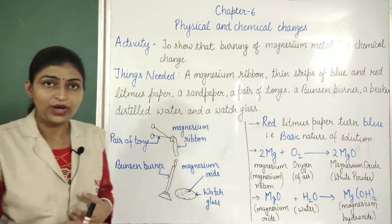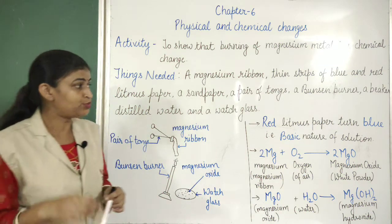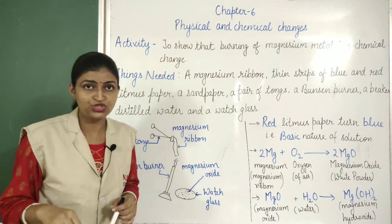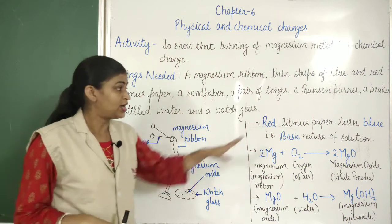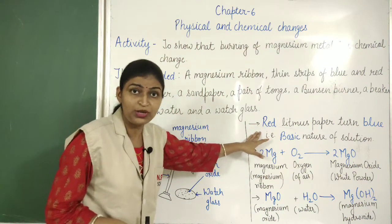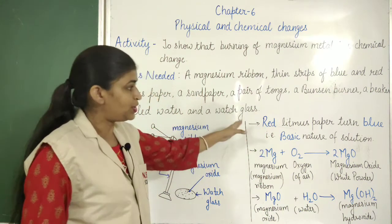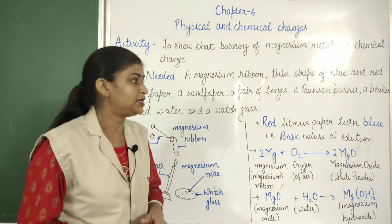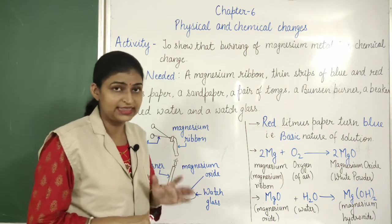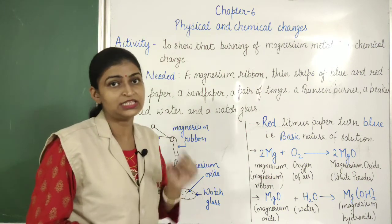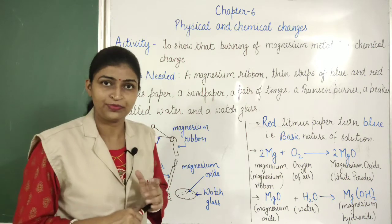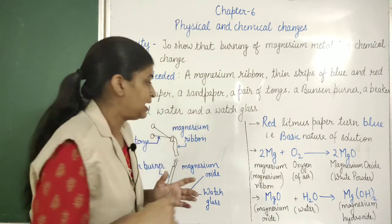When we pour some drops of the solution on red litmus paper, what will happen? The red litmus paper turns blue. That means the solution is basic in nature.